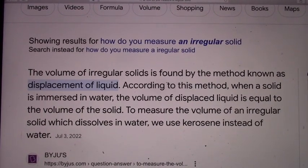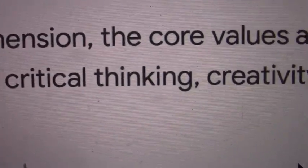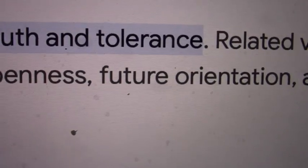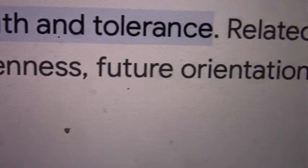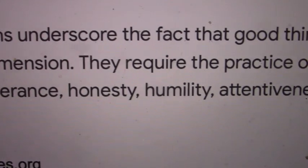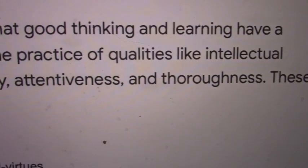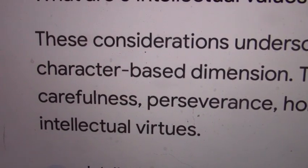Because now you're involving the intellectual community. According to Mr. Google, in the intellectual dimension, the core values are truth and tolerance. Related values include love of truth, critical thinking, creativity, openness, future orientation, and scientific orientation for future generations. Mr. Google also says that these considerations underscore the fact that good thinking and learning have a character-based dimension. They require the practice of qualities like intellectual carefulness, perseverance, honesty, humility, attentiveness, and thoroughness.